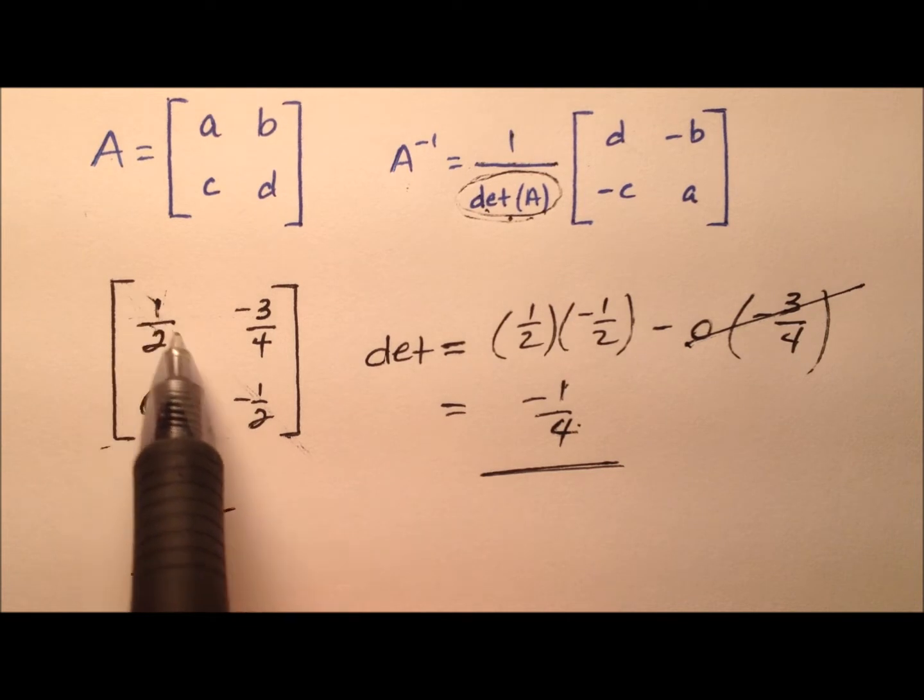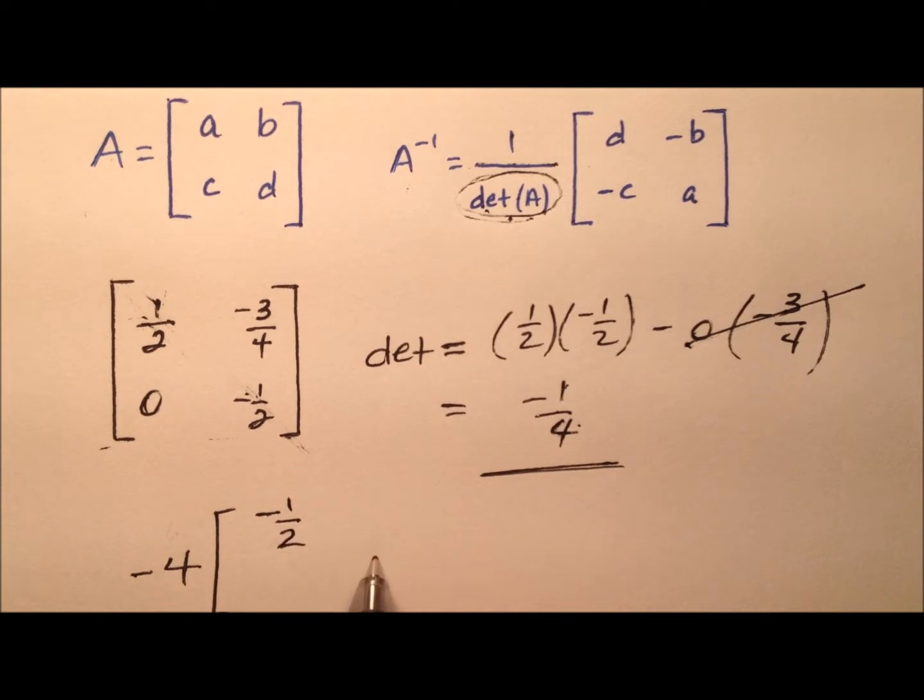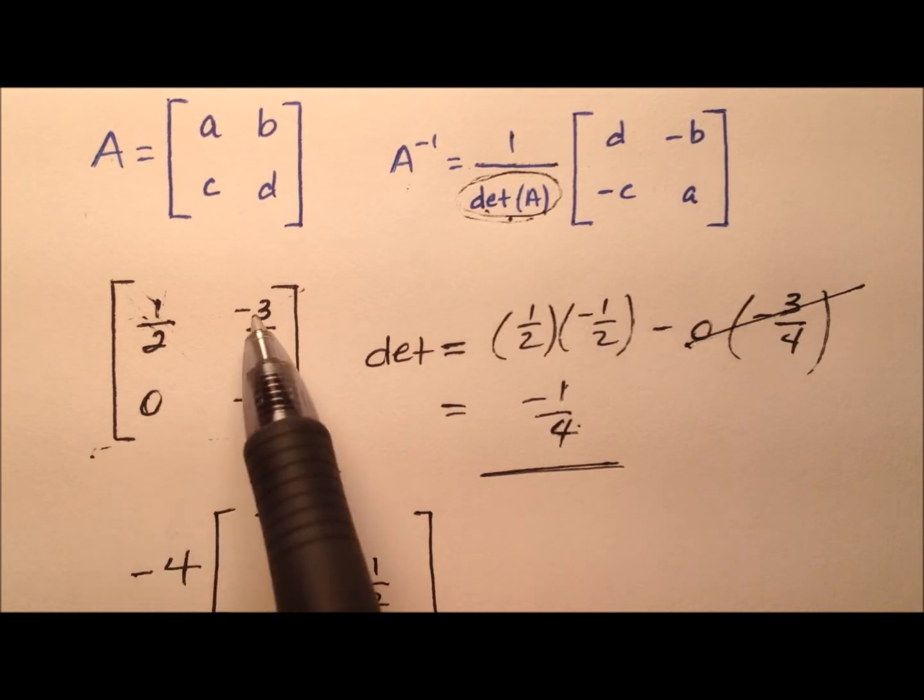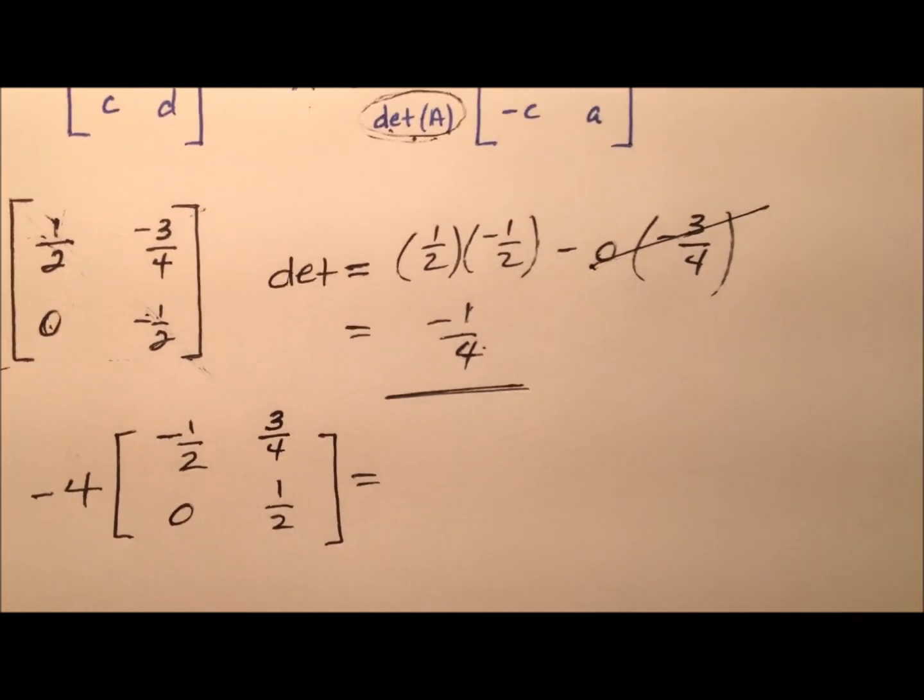For the main diagonal, we're going to switch the order of the terms. So we're just going to replace one for the other. We'll put the negative 1/2 up here and the positive 1/2 down there. And then for the other diagonal, we're going to change the signs. So the negative 3/4 becomes positive 3/4, and the 0, well, he's just 0.